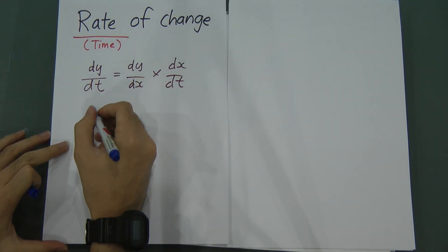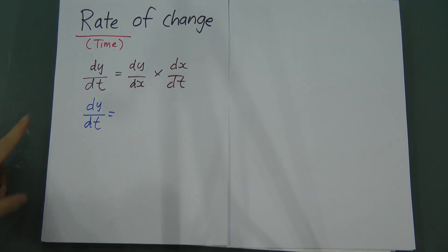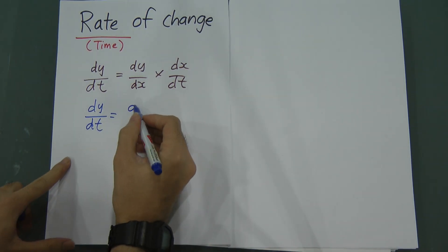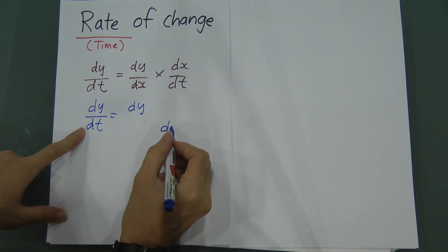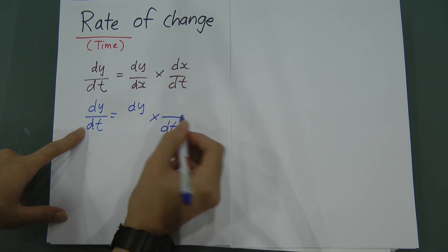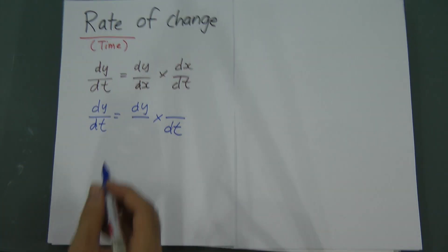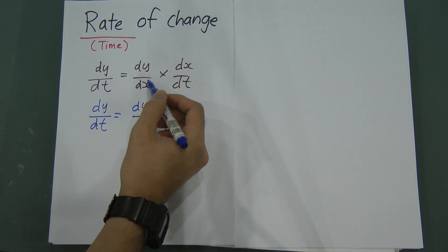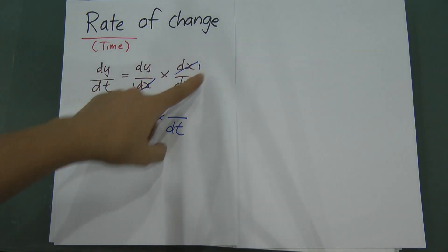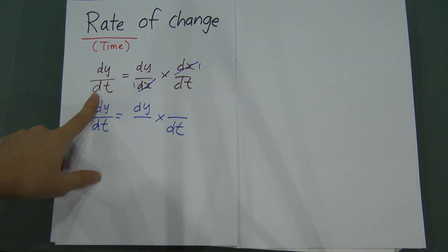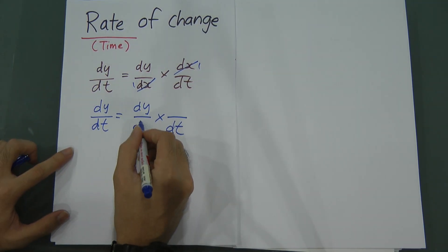If the question wants you to find DYDT, the first thing is you write DYDT first — DY on top and DT on the bottom — then put a multiplication sign and two lines. Why two lines? Because DX and DX can be simplified. After you simplify DX and DX, you get one and one, so DY times one gives DY, and DT times one gives DT. Therefore you get DYDT. So here you write DX over DX.